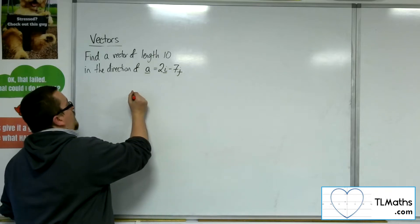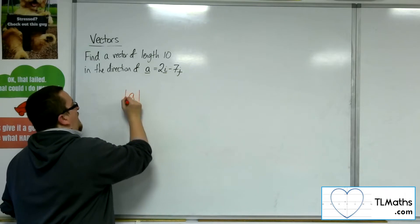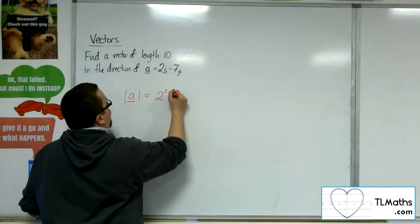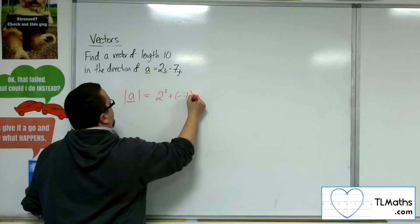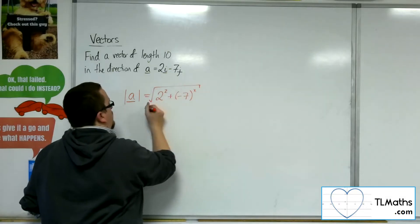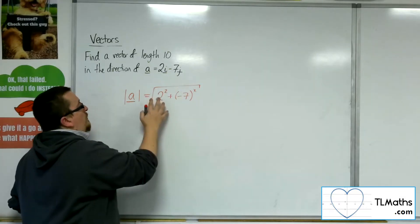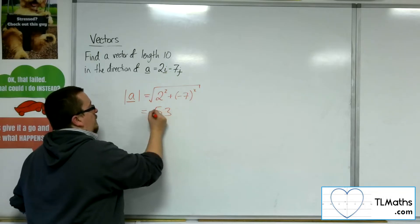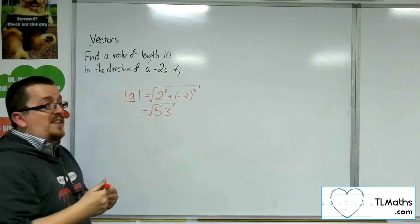So what I can do is first of all, let's have a look at the length that it does actually have. So that would be the square root of 2 squared plus minus 7 squared, square rooted. So we've got 49 plus 4, so 53, square rooted. So that's the length of A.